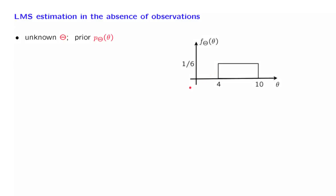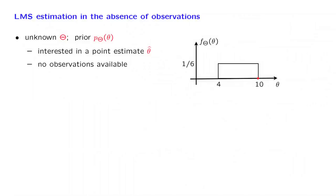As a concrete instance, suppose that our random variable is uniformly distributed over a certain interval. We would like to estimate this random variable — we're interested in a point estimate. However, we look at the very special case where there are no observations available. All that we have is this probability distribution. How do we estimate this random variable?